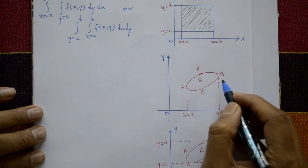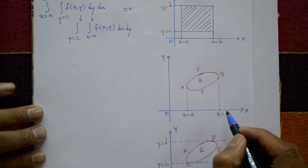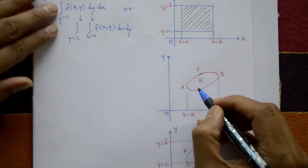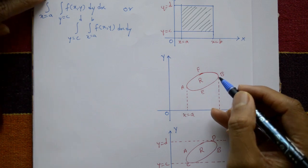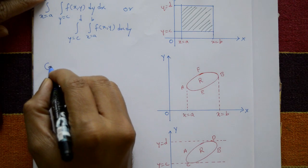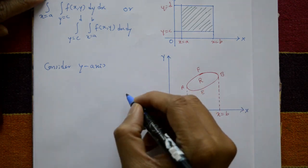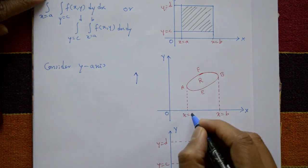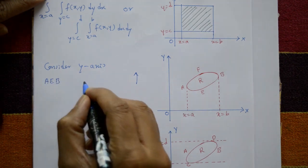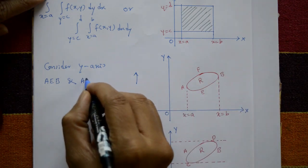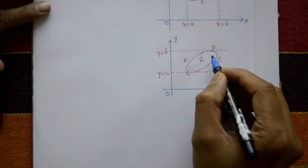Next, see the diagram in the xy-plane. R is a region where x goes from a to b. There are two curves: curve one is aeb and curve two is afb. When you consider the y-axis direction, you always go bottom to top. First consider the bottom curve aeb, then after the top curve afb.